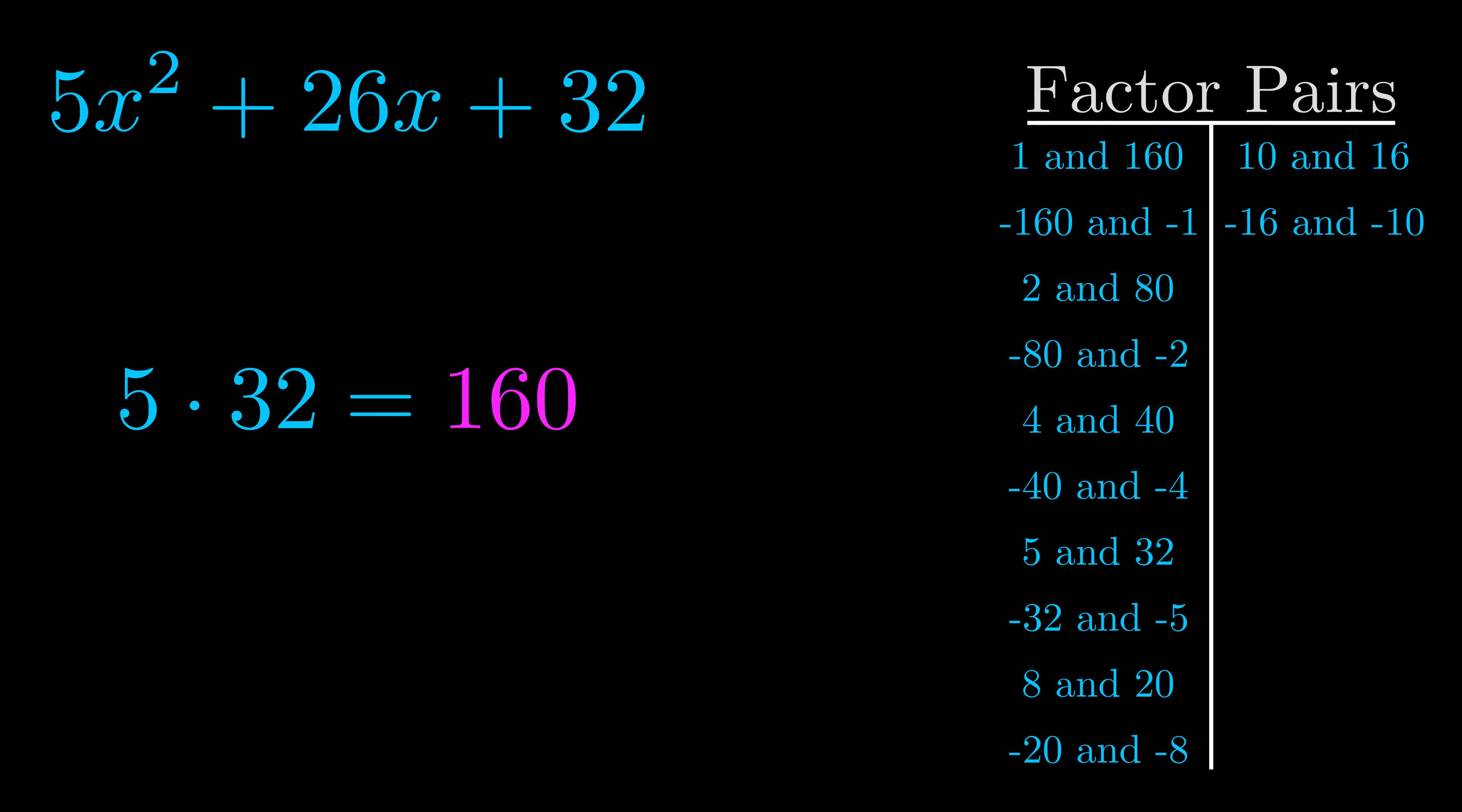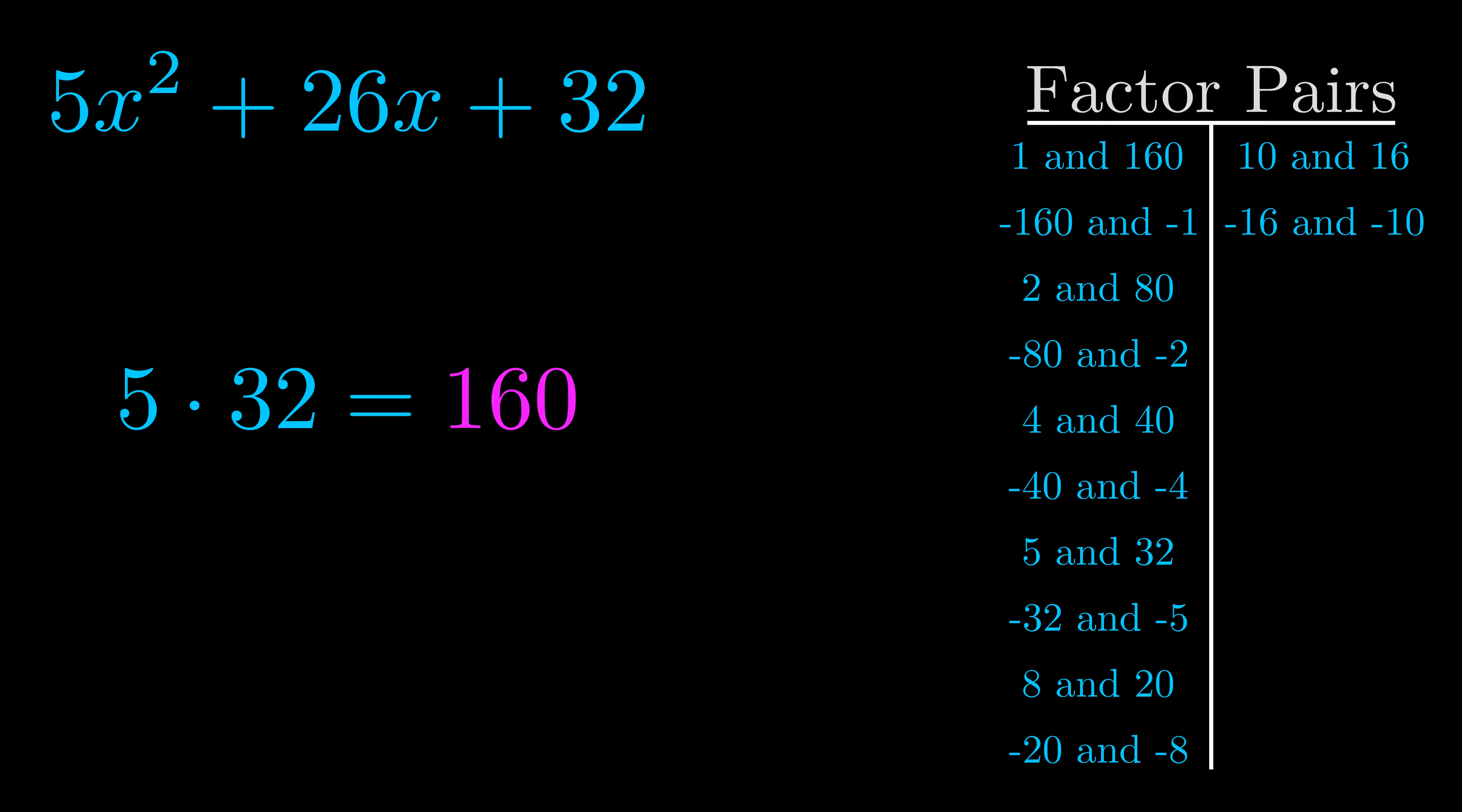Now once you have these factor pairs, the goal is to find which of these pairs adds to the b value. The b value is the coefficient on the x term. That's the middle term, the one that we haven't done anything with yet. And really this is the only factor pair that we need.